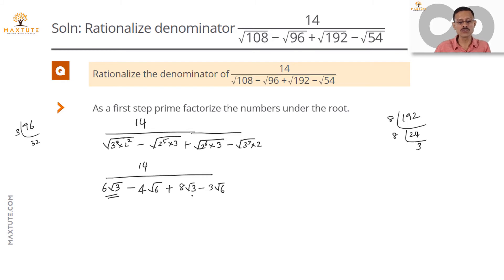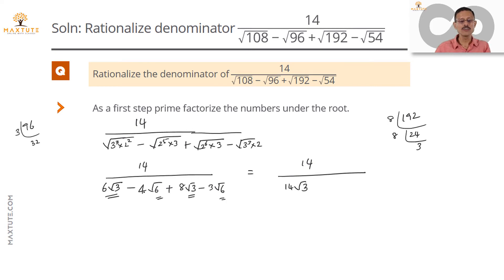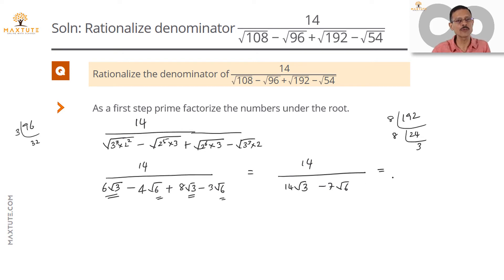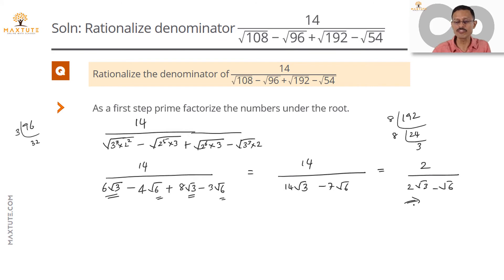We got two terms which are root 3 terms and two terms which are root 6 terms, so instead of 4 terms in the denominator, we end up getting 14 divided by 6 root 3 plus 8 root 3, which equals 14 root 3, and 4 root 6 minus 3 root 6, which is 7 root 6. Incidentally there is a 14 and a 7 — 14 can be written as 7 into 2 — so let's divide numerator and denominator by 7, giving us 2 divided by 2 root 3 minus root 6. This is something familiar; let's quickly recap the process in printed form and then rationalize this to get the final answer.